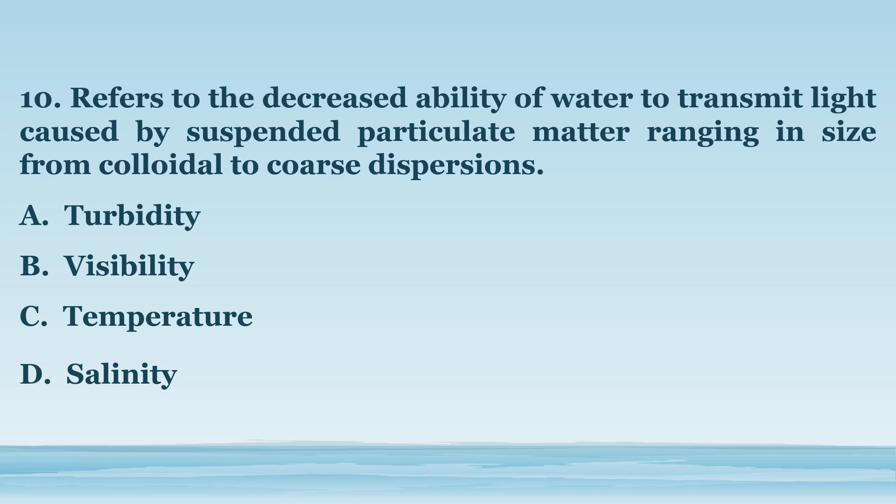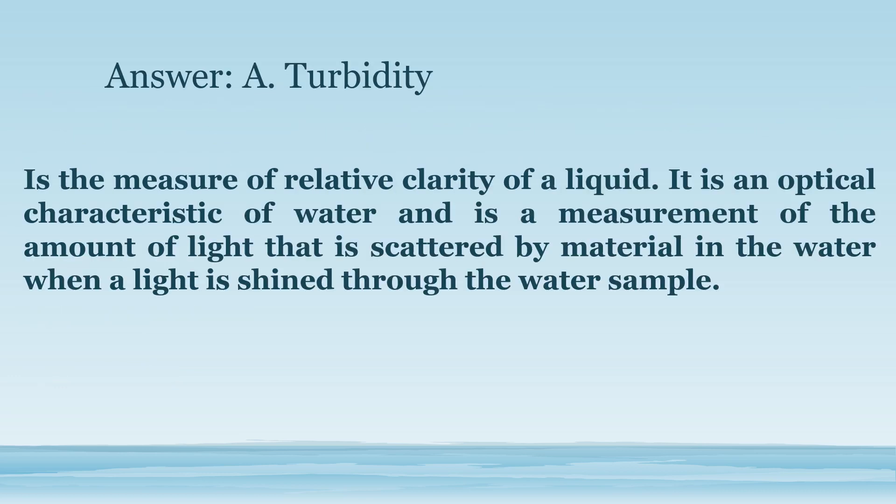Number 10. Refers to the decreased ability of water to transmit light caused by suspended particulate matter ranging in size from colloidal to coarse dispersions. A. Turbidity. B. Visibility. C. Temperature. D. Salinity. The answer is letter A. Turbidity. Is the measure of relative clarity of a liquid. It is an optical characteristic of water and is a measurement of the amount of light scattered by material in the water when a light is shined through the water sample.